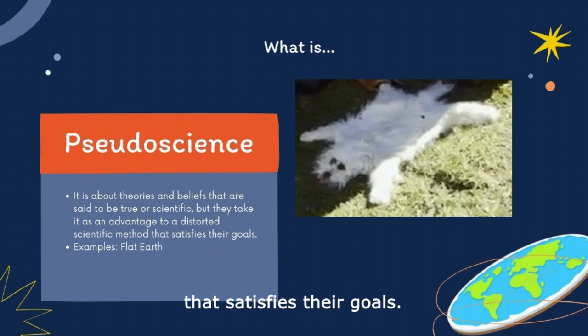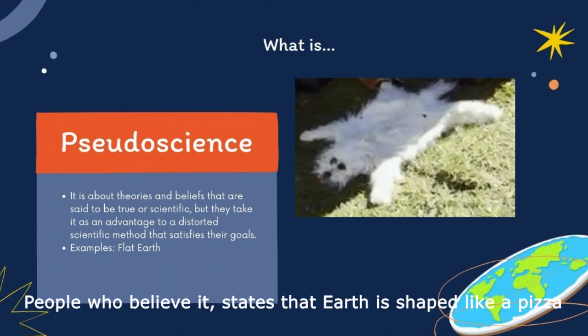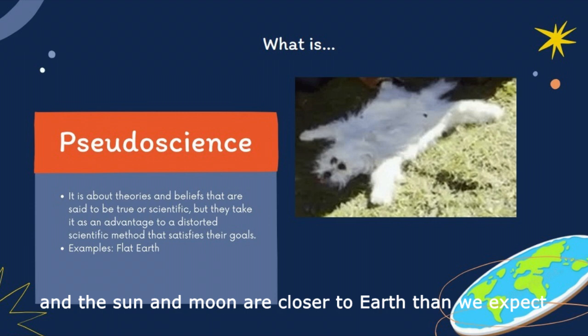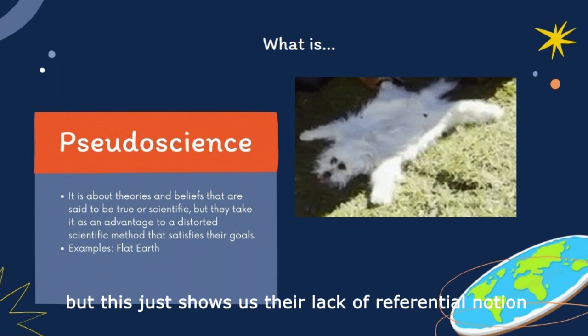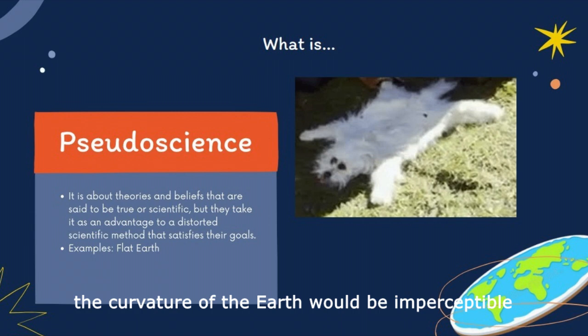One of the most famous examples of pseudoscience nowadays is flat Earth. People who believe it state that Earth is shaped like a pizza, that gravity is a hoax, and that the Sun and Moon are closer to Earth than we expect. To explain their beliefs, flat Earthers constantly cite the fact that we can't see the curve of the horizon. But this just shows their lack of referential notion, since for an observer close to the ground, the curvature of the Earth would be imperceptible.